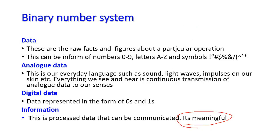If the computer just takes out one symbol, then another one — one plus one — it's meaningless. You still have to process this. So the computer is going to process it, put an equal sign and put the result. This is information — it's meaningful and it can be communicated. So let us not confuse this: computers don't store information, but they only communicate information. Computers store data.